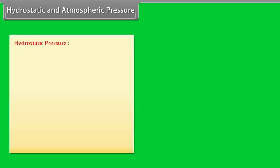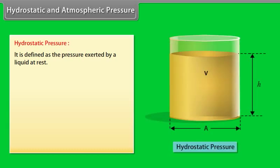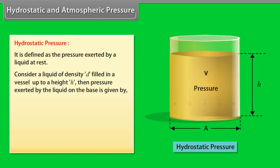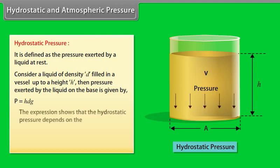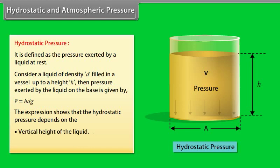Hydrostatic pressure is defined as the pressure exerted by a liquid at rest. Consider a liquid of density D filled in a vessel up to a height H. The pressure exerted by the liquid on the base is given by P = HDG. This shows that hydrostatic pressure depends on the vertical height and density of the liquid.